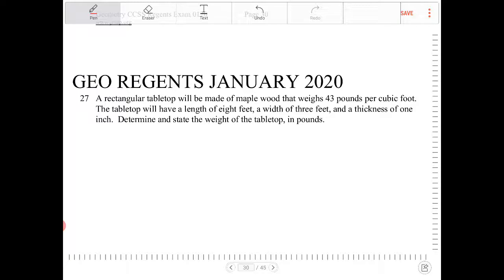Determine and state the weight of the tabletop in pounds. So the information that's given here, that 43 pounds per cubic foot, that is density information here of the wood. And I'm going to label that, I'm going to call this D sub W, which is equal to 43 pounds per 1 cubic feet, so 1 feet cubed.